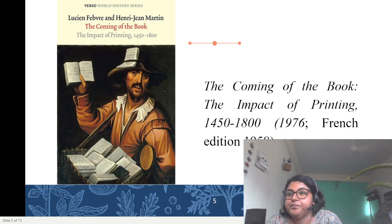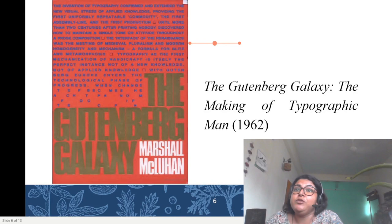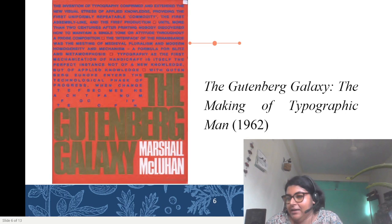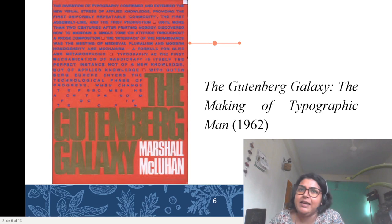Marshall McLuhan's 'The Gutenberg Galaxy: The Making of Typographic Man' in 1962 was another proponent of the impact of Gutenberg's printing machine — again, focusing on the Global North. McLuhan continues to be a staple of media studies and cultural studies even today, including in India.